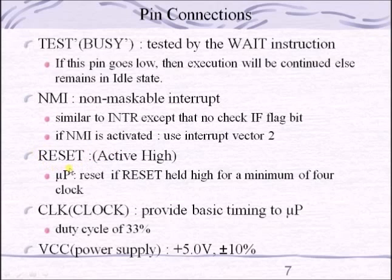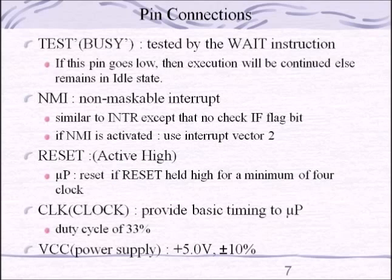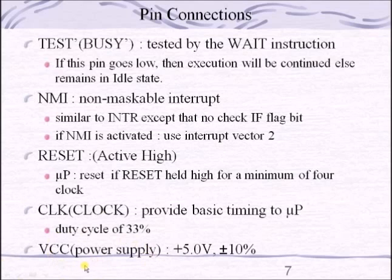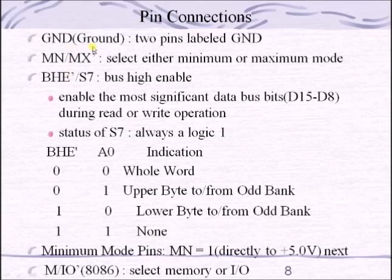The RESET pin is an active high pin — when a logic high is given, the processor enters reset state, and all internal registers are initialized to predefined values. The CLOCK pin is used to provide the clock signal, which synchronizes all internal components and blocks of the processor. Without a clock signal, there is no synchronization between the processor and other components. The VCC supply pin accepts a maximum voltage of 5 volts, and the GND ground pin is used for directing larger currents to ground.